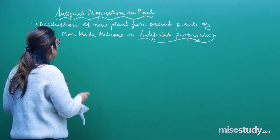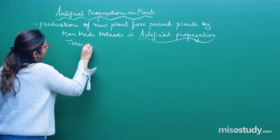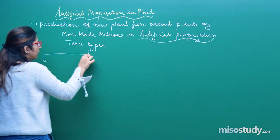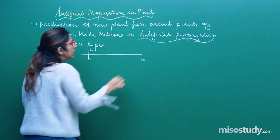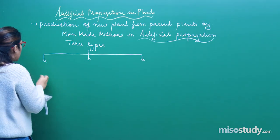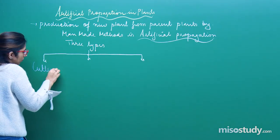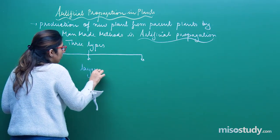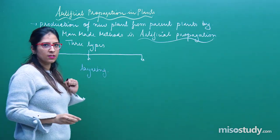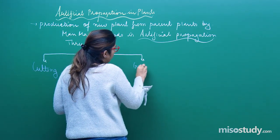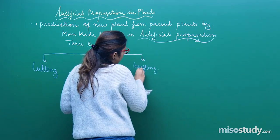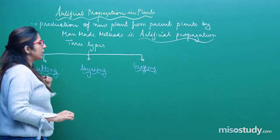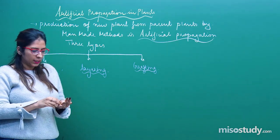There are three types of artificial propagation. The first is called cutting, the second is layering — very interesting methods — and the third is grafting. Let us focus on the cutting part first.